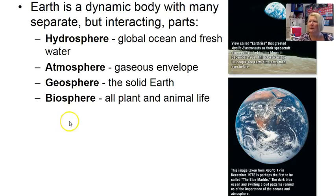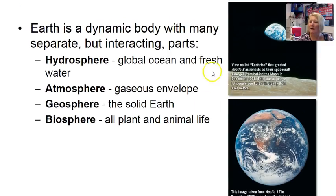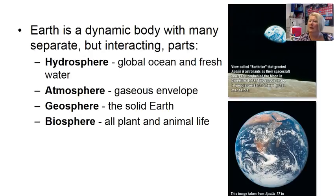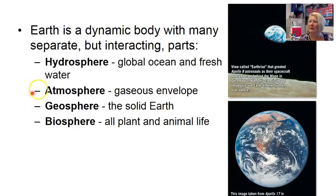If we look at the earth, it is a dynamic planet and it has separate but interacting parts. What we want to look at here are the different spheres on our planet. Showing here we have the hydrosphere — that's the water part of our planet. Also within the hydrosphere, some refer to the cryosphere as a subsphere, which is the frozen water portion of our planet. We have the atmosphere, that's the gaseous envelope surrounding our planet. The geosphere is the solid earth, and the biosphere is the plant and animal life. Now all of these spheres are independent and separate, but they are interacting.